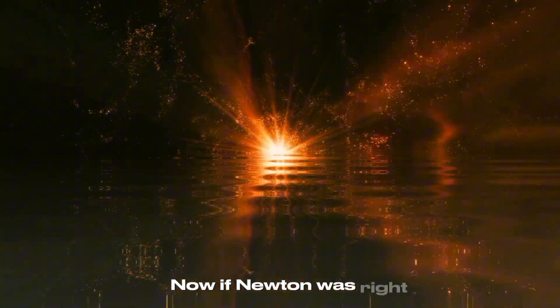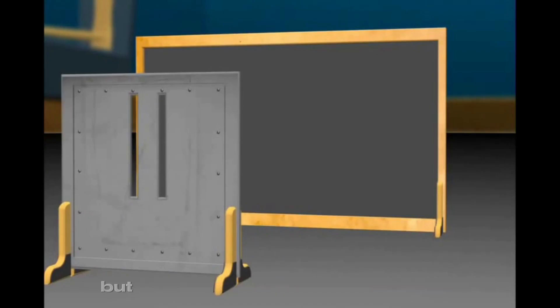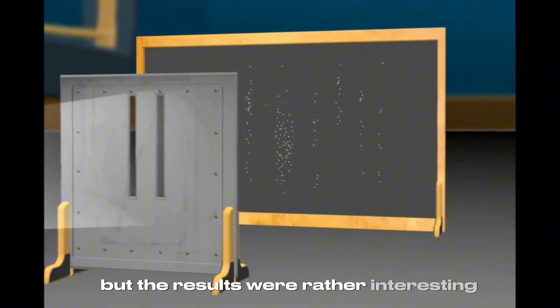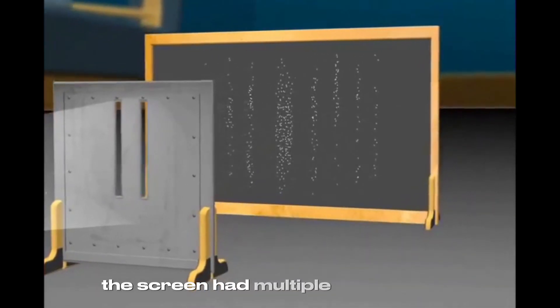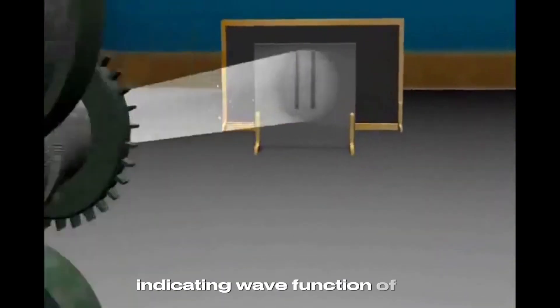Now, if Newton was right, the screen should have two bands of light indicating particle nature of light. But the results were rather interesting. The screen had multiple fringes of light indicating wave function of light.